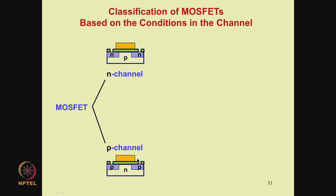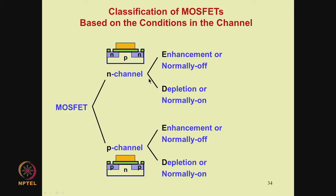Each of the N- and P-channel devices can be either an enhancement type, also called normally off, or the depletion type, also referred to as a normally on device. In a normally off device, if you do not have a gate voltage applied, there would be no current flow. In a normally on device, even when there is no gate voltage applied, a current flow can exist, and by applying the gate voltage you can further modulate the current flow. Whether a device is normally off or normally on depends on the structure of the gate, the substrate, and the interface.